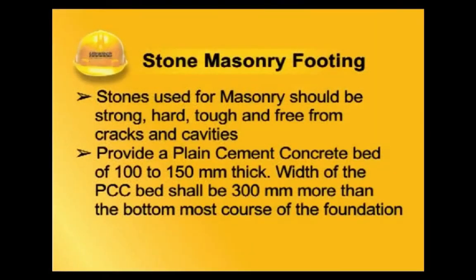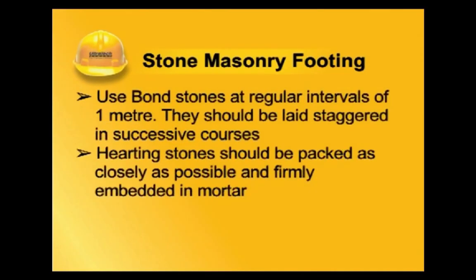Stones used for masonry should be strong, hard, tough, and free from cracks and cavities. Provide a plain cement concrete bed of 100 to 150 mm thick, with the PCC bed width 300 mm more than the bottommost course of the foundation. Use bond stones at regular intervals of 1 meter, laid staggered in successive courses. Hearting stones should be packed as closely as possible and firmly embedded in mortar.